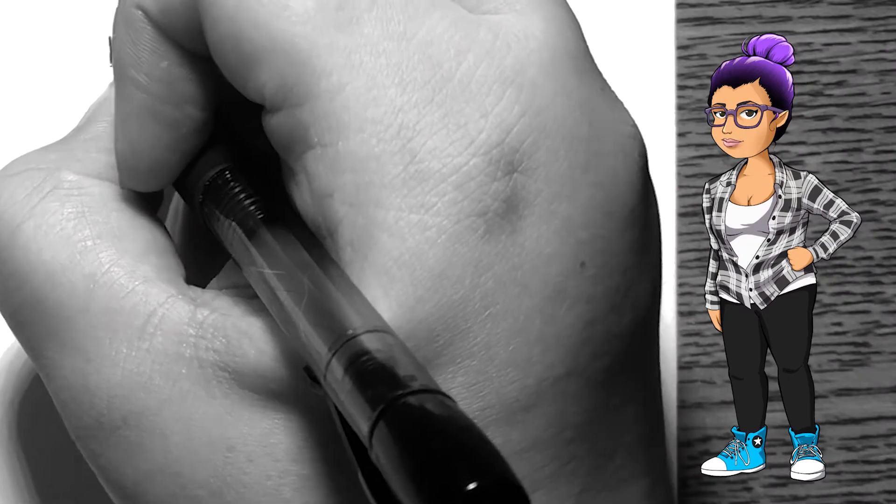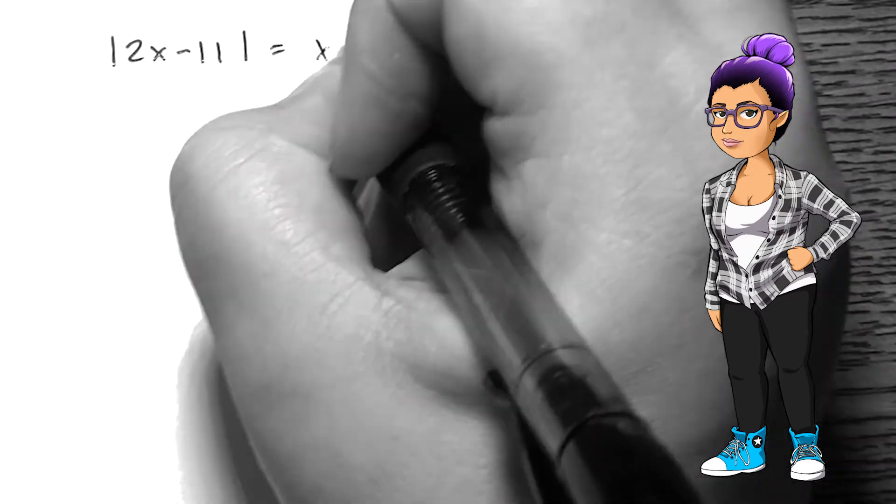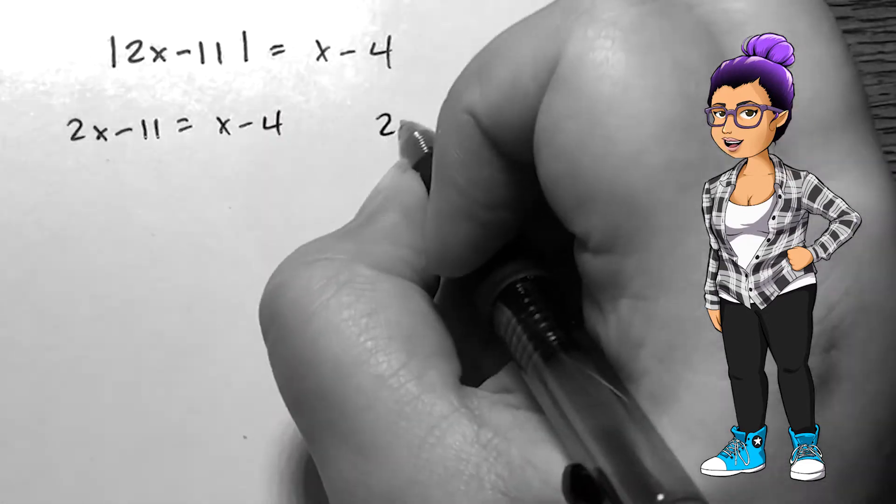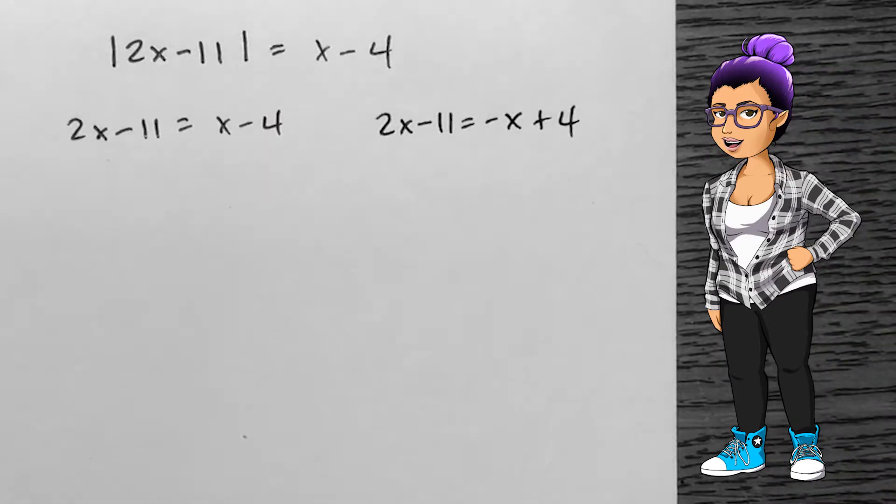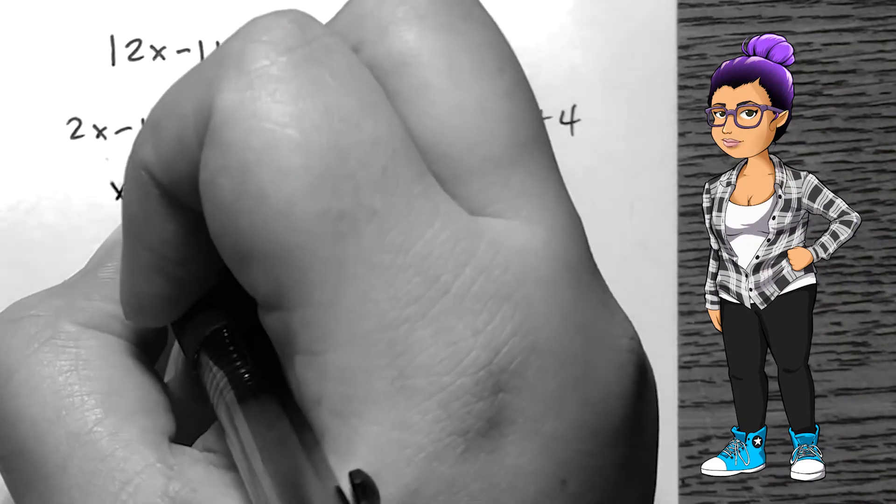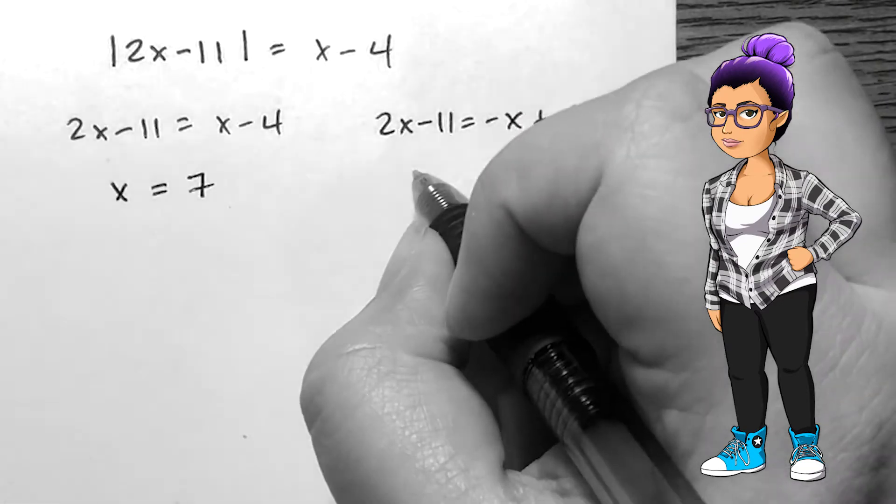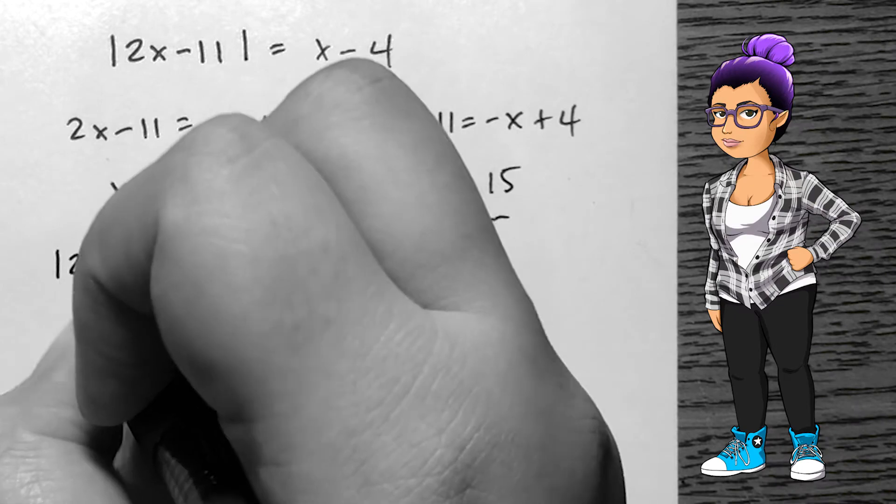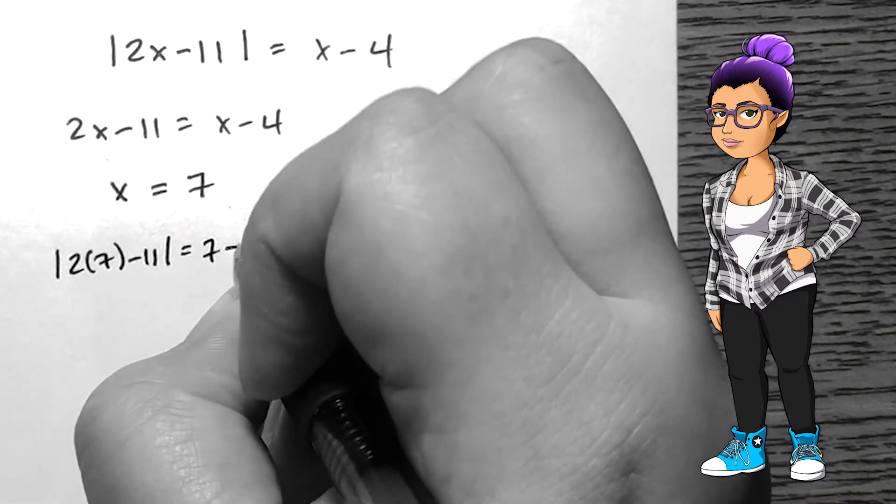I might also have x's on the outside of the absolute value symbol, but the method is the same. Given absolute value of 2x minus 11 equals x minus 4, I should see what happens when 2x minus 11 equals x minus 4, as well as when 2x minus 11 equals negative x plus 4, the negative version.